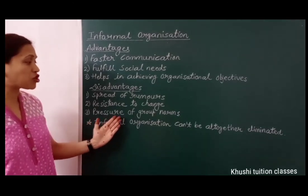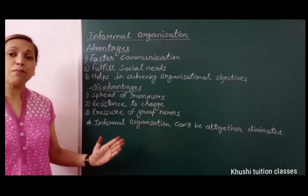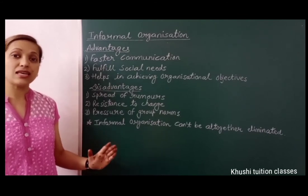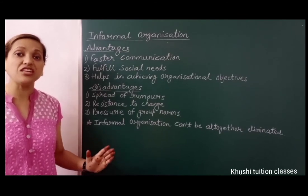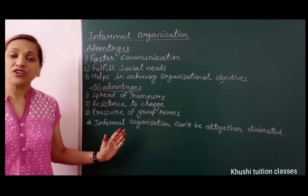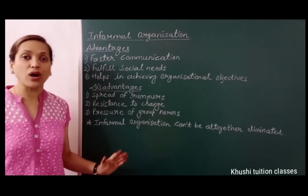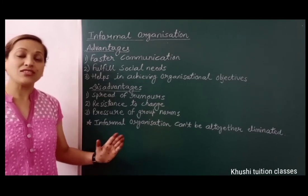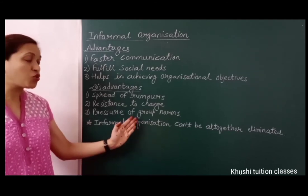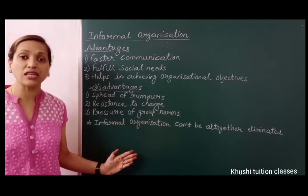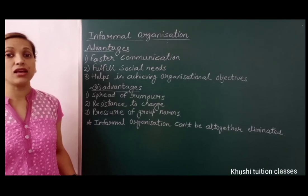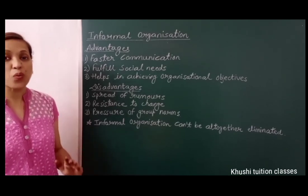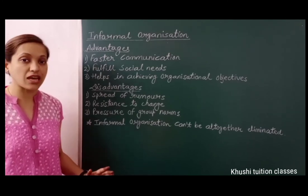The third disadvantage is pressure of group norms. Sometimes in informal organization there are group norms that even if you don't want them, you cannot change. Suppose you are part of a trade union and don't agree that the union should go on strike — but you still follow the group norm and cannot break it, because if you go against the group, working in the organization becomes very difficult for you.